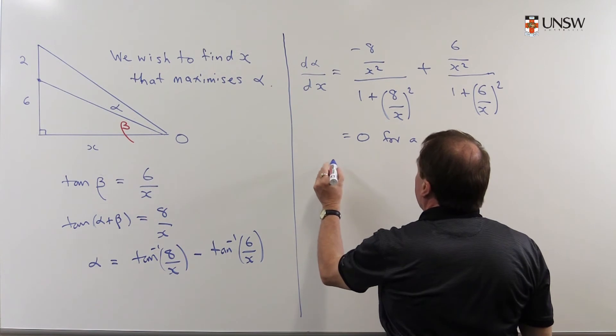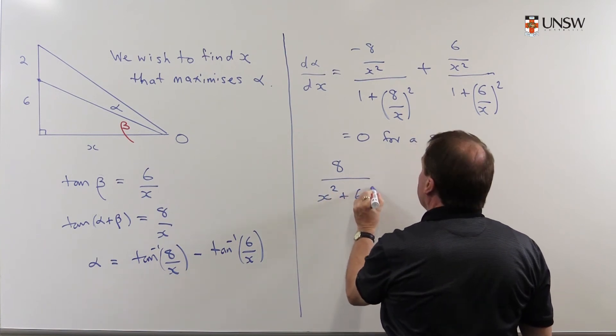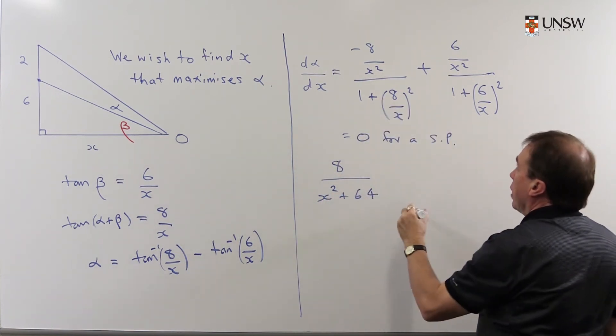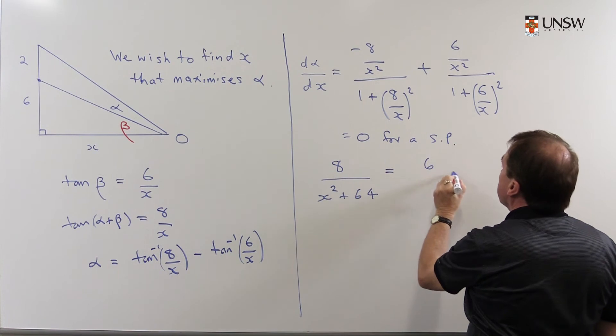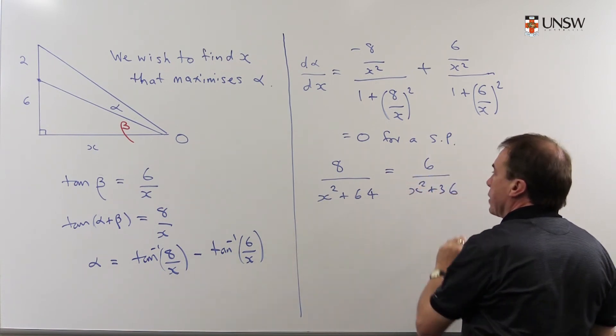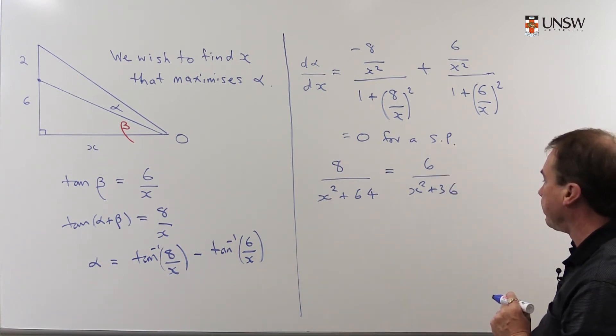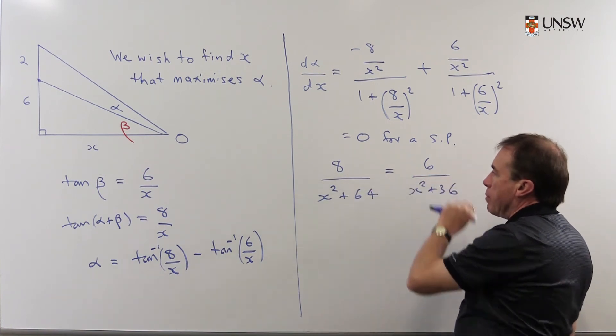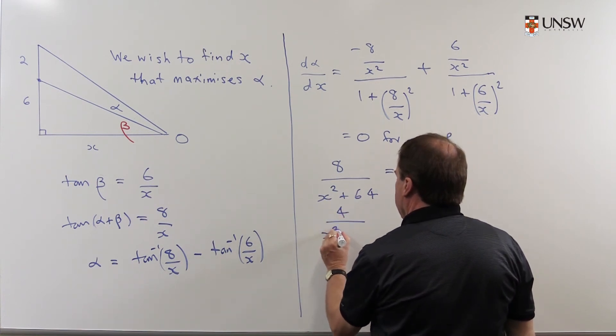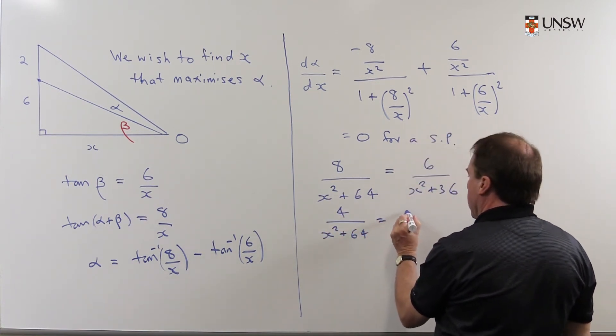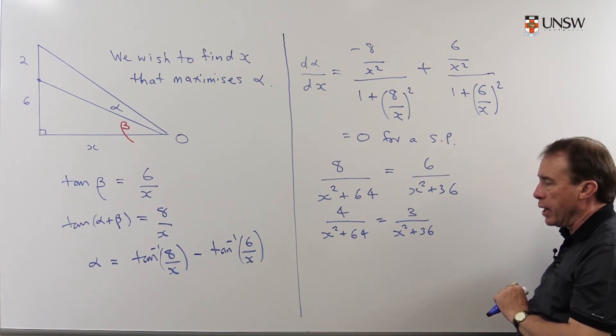I'll leave you to check the arithmetic here. I'm going to end up with 8/(X² + 64). When I pull it on the other side and multiply both sides by top and bottom by X², on the other side I'm going to end up with 6/(X² + 36). I can divide top and bottom here by 2, so I can write this as 4/(X² + 64) = 3/(X² + 36), and now I can just cross multiply and simplify.